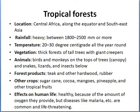Other crops like sugarcane, cocoa, mangoes, pineapple, and other tropical foods are also found in tropical forests. Regarding the effects of these regions on humans residing there — they are quite healthy because the amount of oxygen the region provides is quite sufficient for a healthy life. However, diseases like malaria are common and life-threatening in such regions.